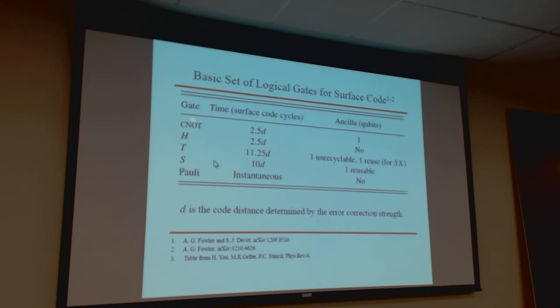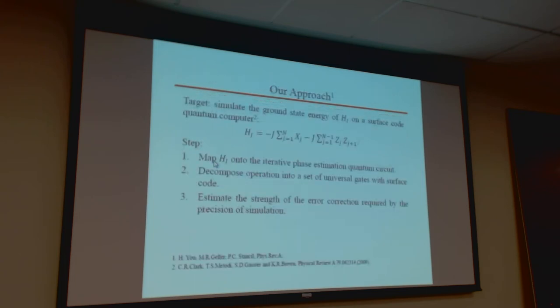If we look at the signal gate, it's like 2.5g, where g is the code distance, determined by the error of the hardware and the stress. This code actually determines how big the surface code patch should be, and also determines how large the surface code cycle should be. We also have the H gate and T gate. The T gate is not transversal, so you need to do state distillation.